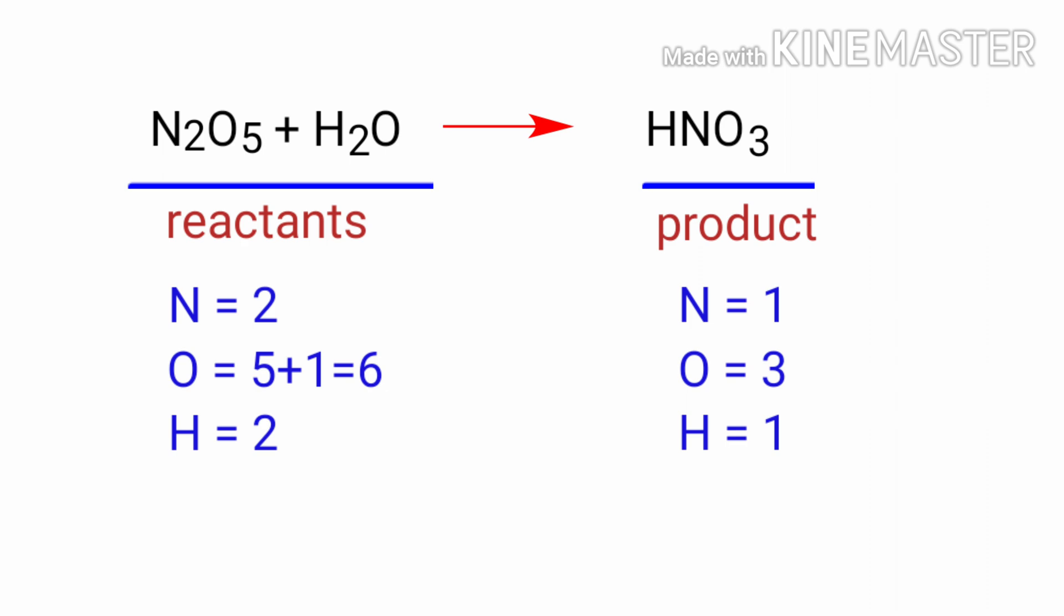In the reactants side there are 2 nitrogen atoms, 6 oxygen atoms, and 2 hydrogen atoms. On the products side there are 1 nitrogen atom, 3 oxygen atoms, and 1 hydrogen atom.